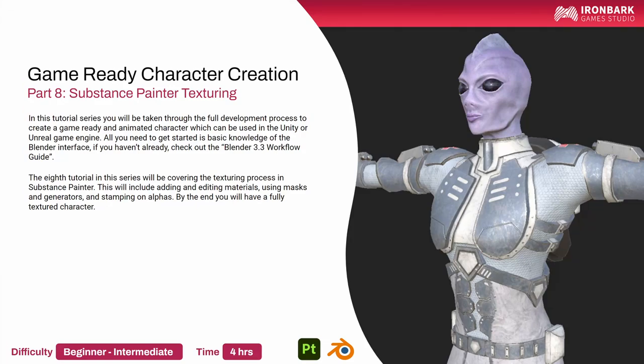G'day, Michael from Ironbark Game Studio, and welcome to the eighth tutorial in this series, which will be covering the texturing process in Substance Painter. This will include adding and editing materials, using masks and generators, and stamping on alpha details. By the end of it you will have a fully textured character.